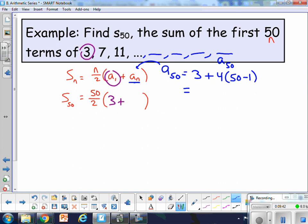That ends up being, A sub 50. Let's just calculate it. It's 3 plus 4 times 49. So let's get a value for that. 3 plus 4 times 49. It's giving me a value of 199. So I know the 50th term is 199.